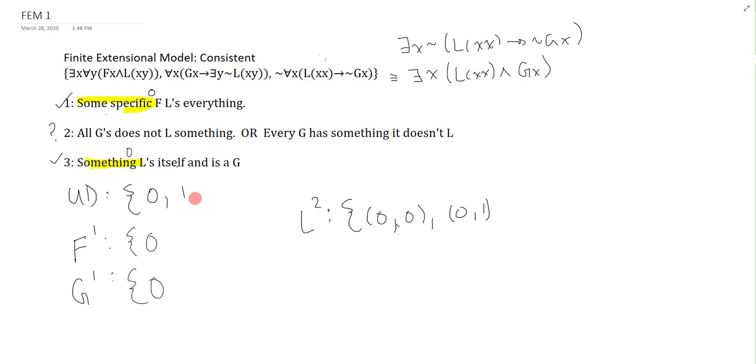One way you might think to fix it is you might think okay well I'll just add something here too. And if I add something here now this works out 0 is not L-ing 2 thumbs up this is good. Except the problem with making this good is I have now made premise 1 or sentence 1 false because some specific F has to L everything. Okay well then I would add 0 2 but now you should see the problem. Adding 0 2 here again makes sentence 2 false and we're sort of just moving in circles. So I don't want to do any of those things.